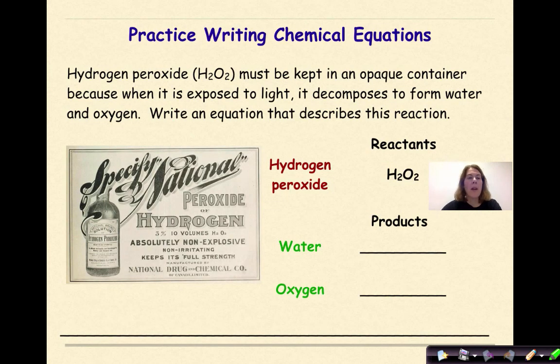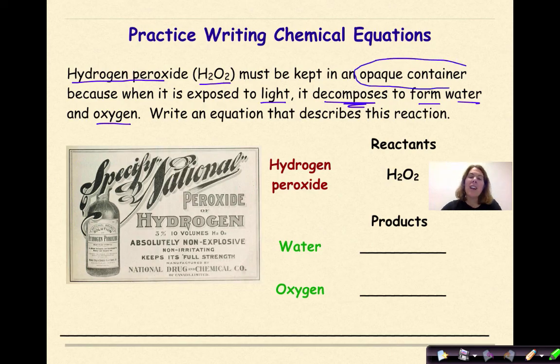Let's look at another example. Hydrogen peroxide, which is given as H2O2, must be kept in an opaque container because when it is exposed to light, it decomposes to form water and oxygen. Write an equation that describes this reaction. Now, remember, an opaque container means that it's not see-through. Typically, if you ever go to a grocery store or a drugstore, if you try to purchase hydrogen peroxide, it comes in a brown container.